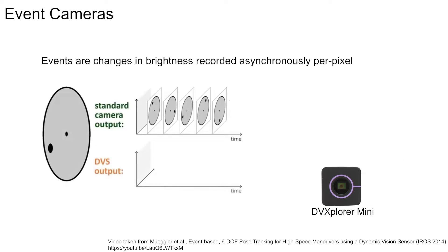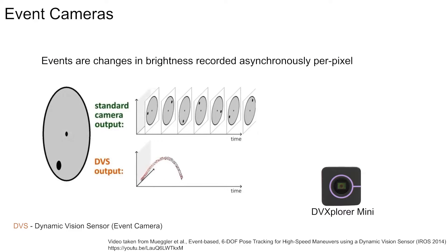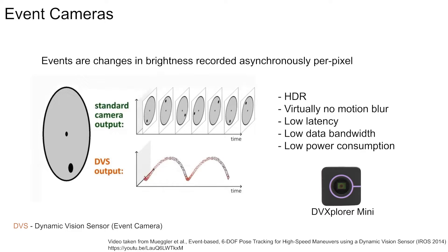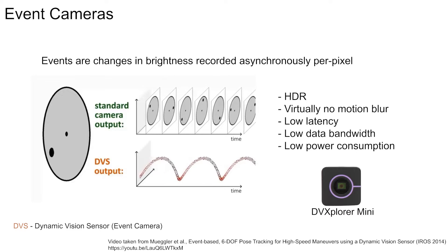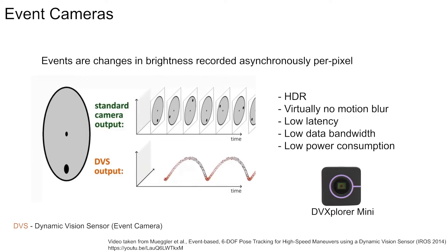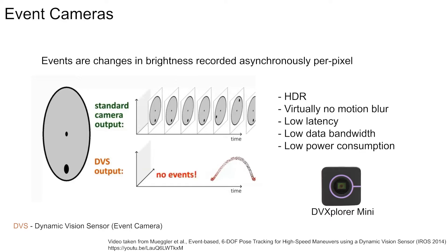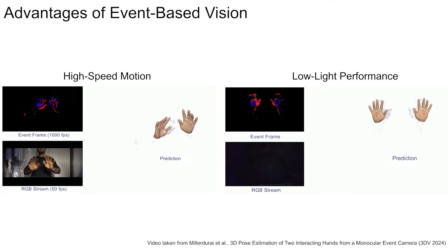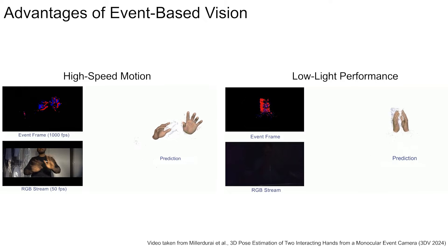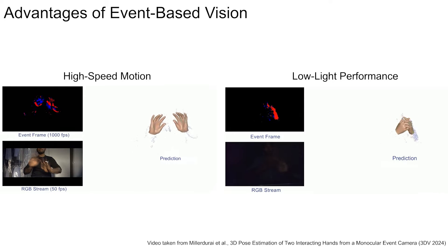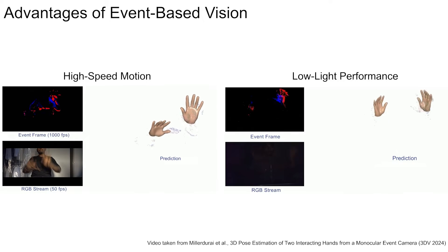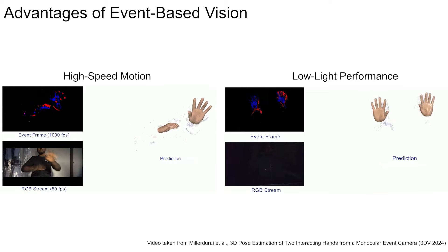Event cameras record streams of asynchronous per-pixel intensity changes called events, enabling high dynamic range, lack of motion blur, low latency, improved data bandwidth, and less power consumption. Moreover, event cameras generate no events in scenarios with no observable motion. They can capture motions with high temporal resolution and operate effectively in low-light scenarios, outperforming traditional RGB cameras, and provide high pose update rates with robustness in challenging lighting conditions.